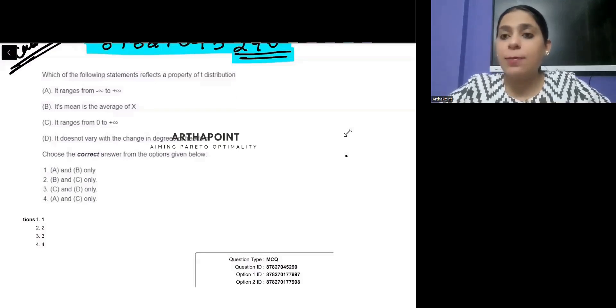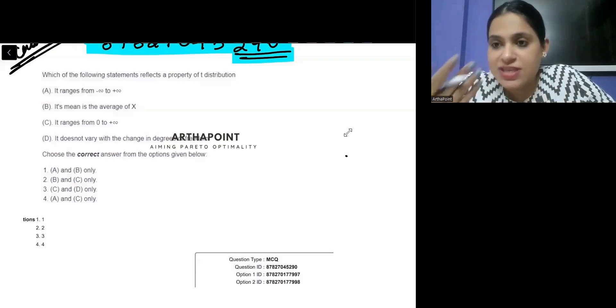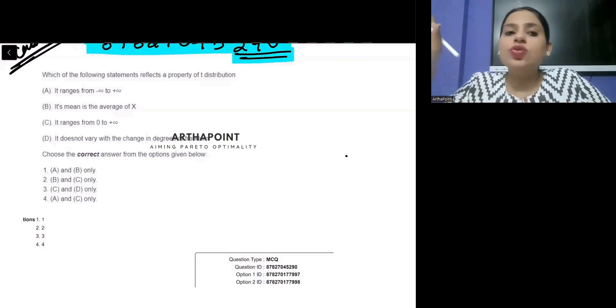To prove something, you need a book in hand. Us book ke basis pe, only if you have, you know, if you have seen that in the book, tab you can go ahead and claim it ki this book says that this is this, right? So,